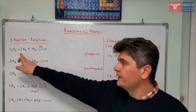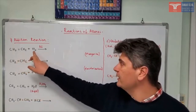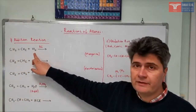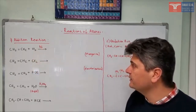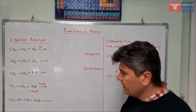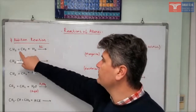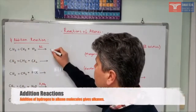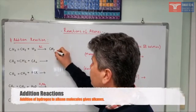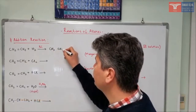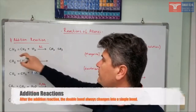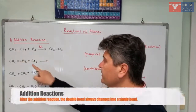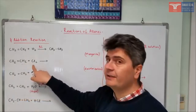Let's assume that we have an ethylene molecule and we are trying to add hydrogen to it. In order to have this reaction, we need to have some nickel catalyst in the medium. One hydrogen adds to the first carbon and one hydrogen adds to the second carbon atom. So that CH₂ becomes CH₃, the second one also becomes CH₃, and the double bond between them changes into a single bond.